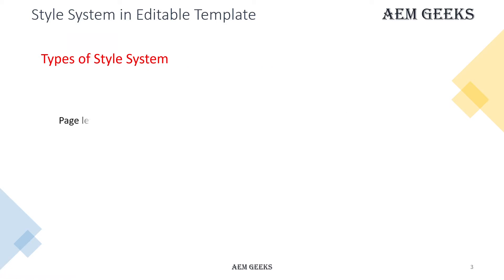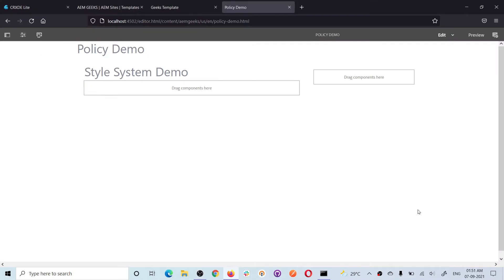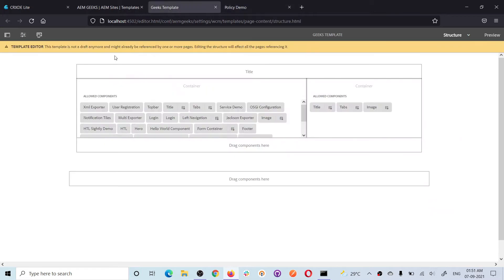The style system can be added at the page level and the component level. To use these styles, your front-end developer should have already written the CSS. This is basically a practical topic, so let's understand all these things using a demo. I created a page and on the page I added the simplest component called Title. Using this component I'll explain the style system. Let me first explain how to add the style system at the page level — go to the template.